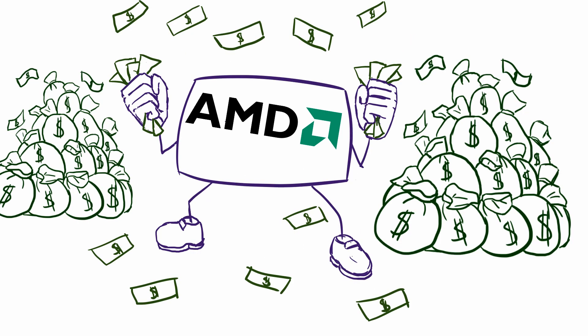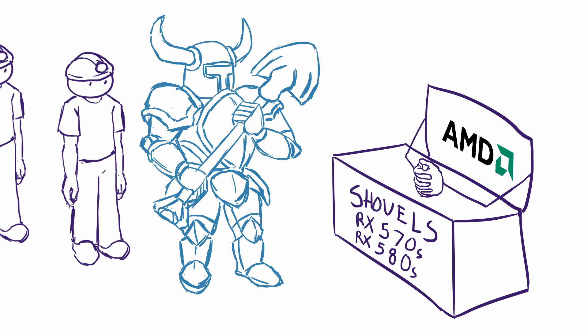Companies that sell these components, like AMD, are making a lot of revenue from cryptocurrency. They recognize that the best way to make a lot of money off a gold rush is not to mine gold, but rather to sell the shovels that are needed to mine.